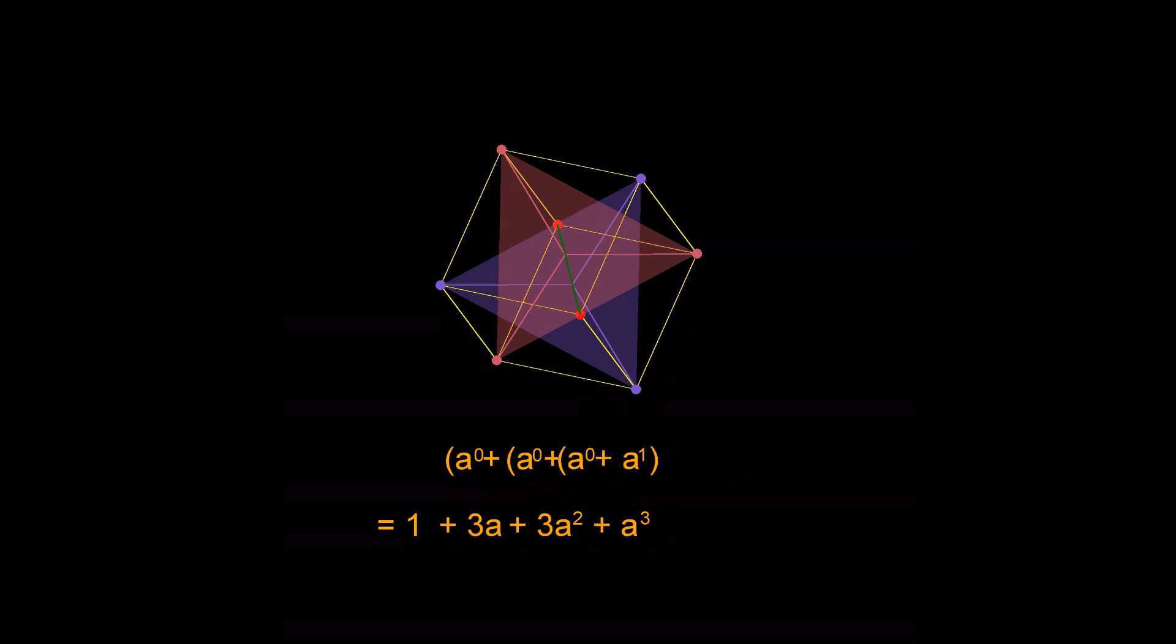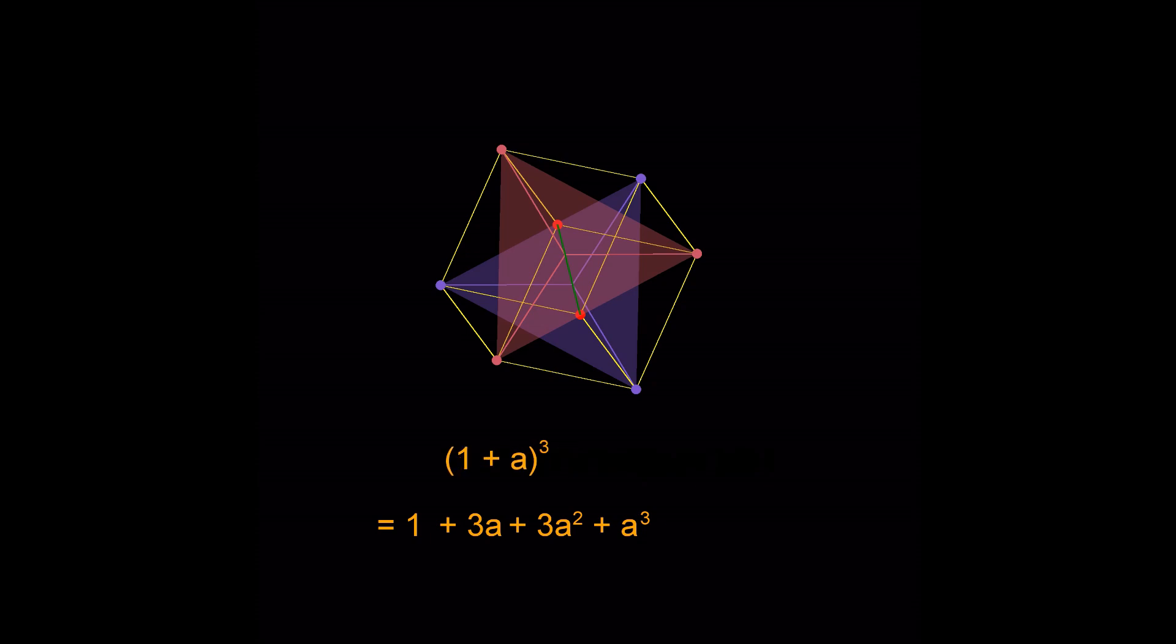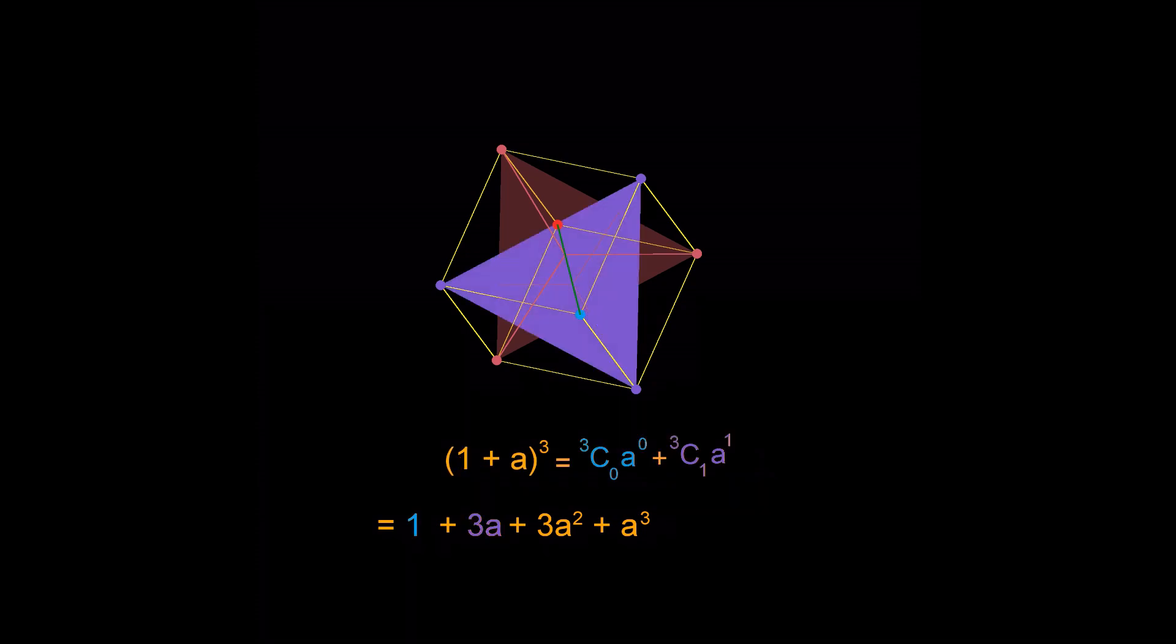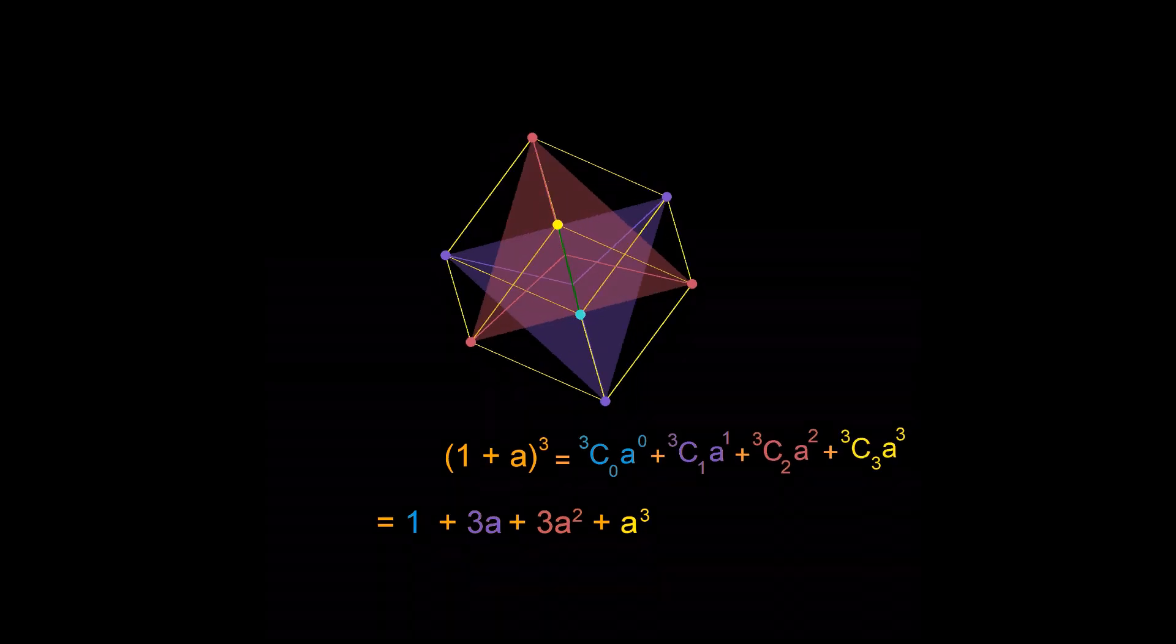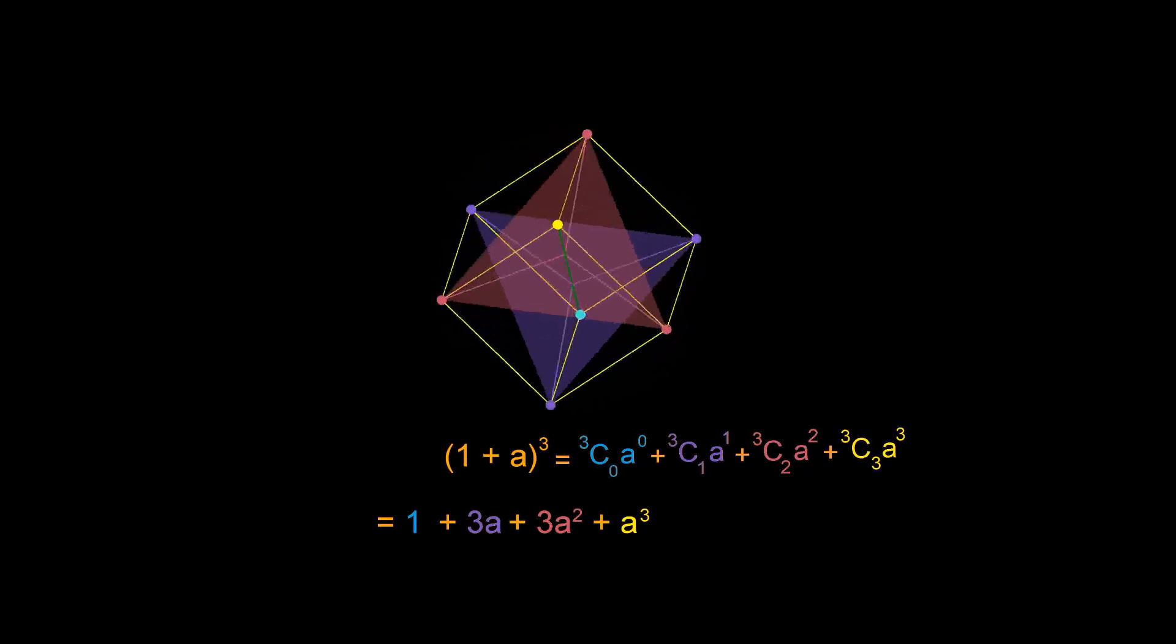Some of you will recognize these as binomial coefficients. 1 plus a cube equals 3 choose 0 a to the power 0 until 3 choose 3 a cube. Let's take a few seconds to digest this.